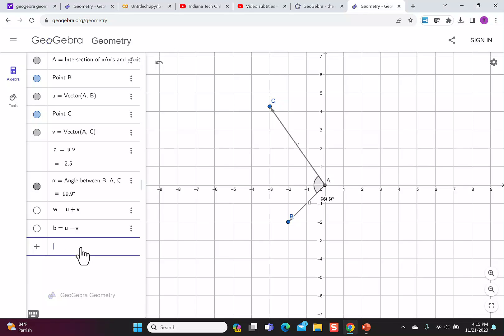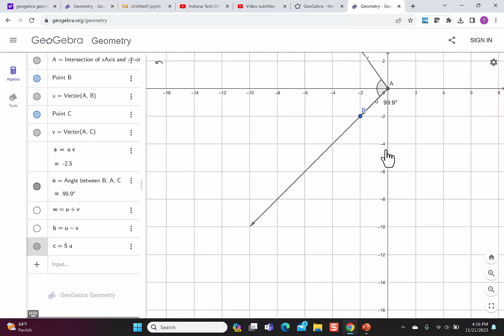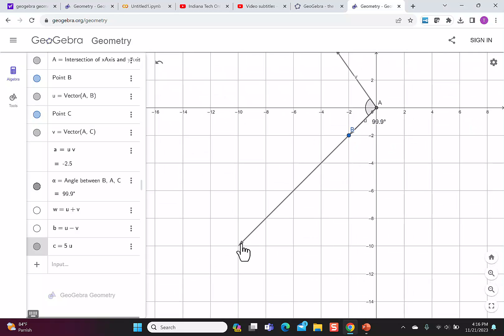One last thing I want to show you, you can do scalar multiplication. So say I want to do 5 times u. I write 5 times u, it gives me this extended vector, which is negative 10, negative 10. And I could move around so you can see this elongated vector that we get by doing scalar multiplication.